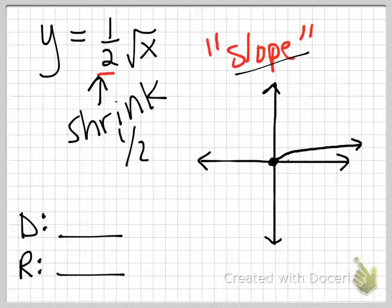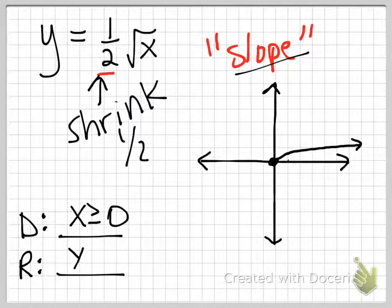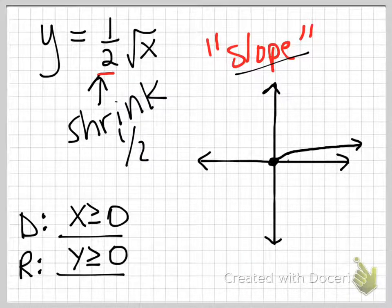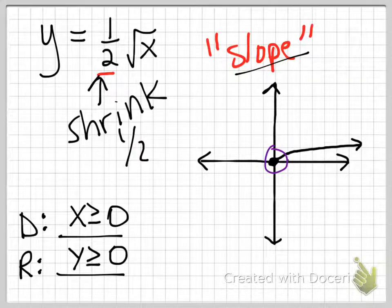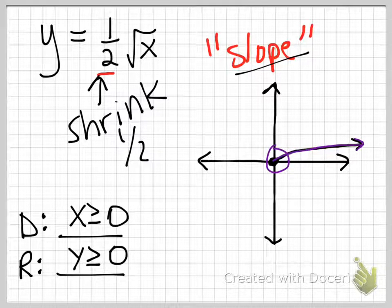The domain hasn't changed — x is still greater than or equal to 0. And the range hasn't changed — y is still greater than or equal to 0. Notice that this starts at (0, 0) and it only goes up and to the right, so that's positive in both x and y.